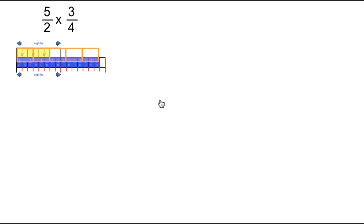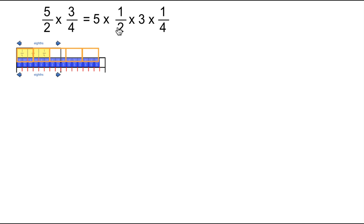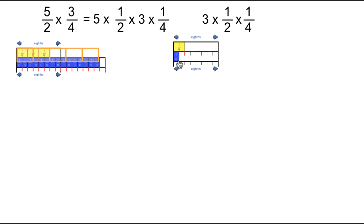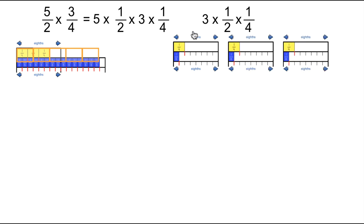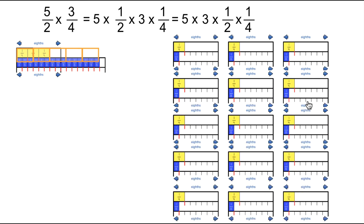Let's look at this a different way. We can rewrite five-halves times three-fourths as five times one-half times three times one-fourth. Using the commutative property, we can look at one-half times three times one-fourth, rewritten as three times one-half times one-fourth. We already know one-half times one-fourth equals one-eighth. So we have three of those, then five times all of that, which gives us fifteen one-eighths, or fifteen-eighths.